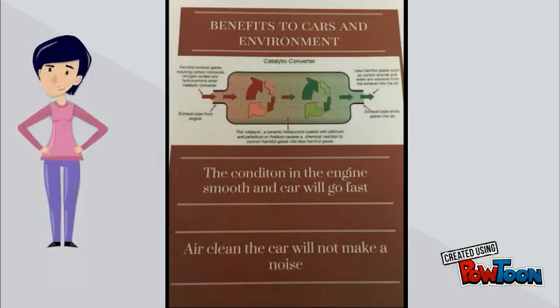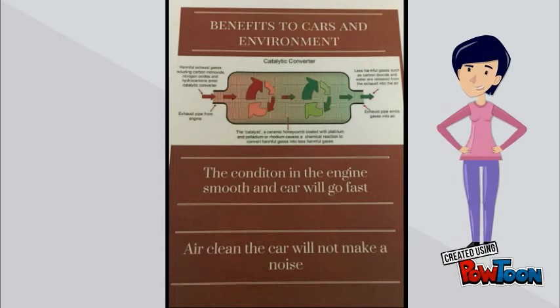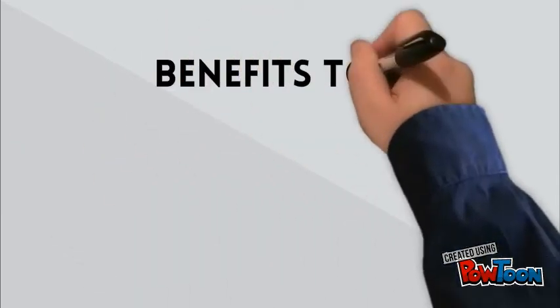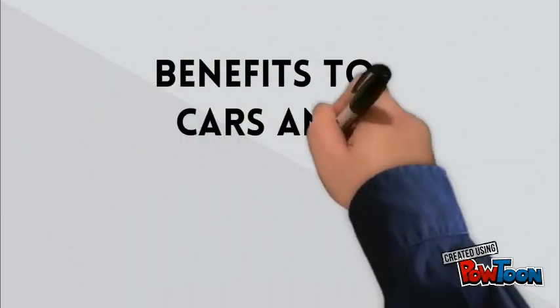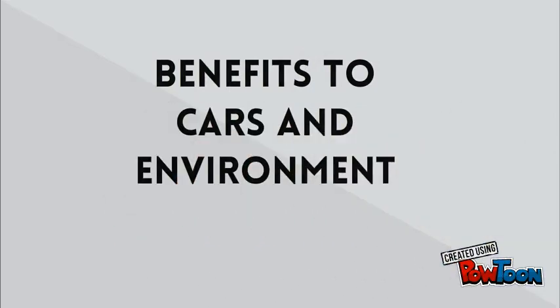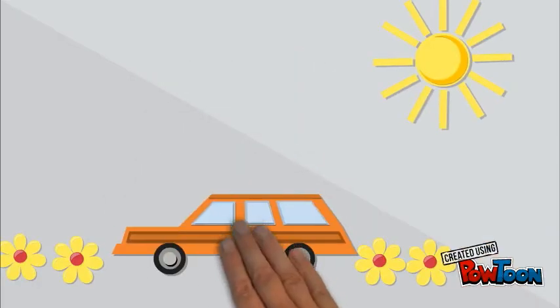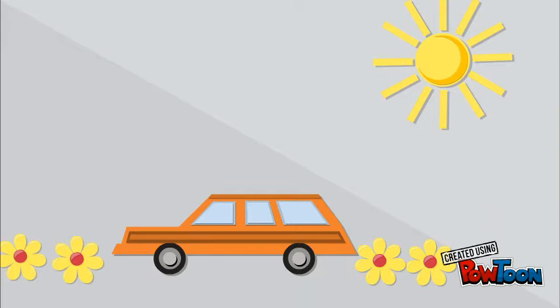This is a catalytic converter diagram. This picture shows you more detail about how catalytic converters work. Benefits to cars and environment: the condition in the engine is smooth and the car will go fast. The air is clean and the car will not make noise.